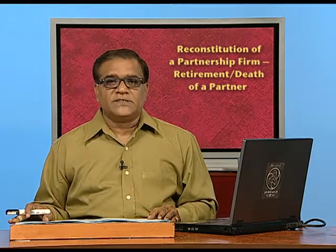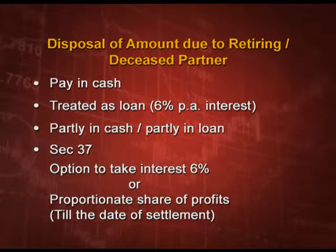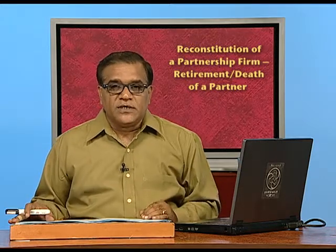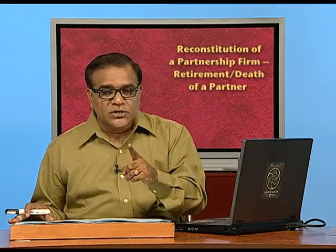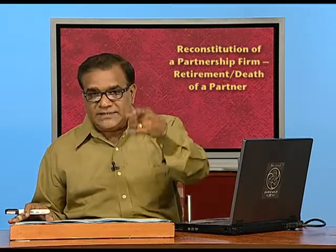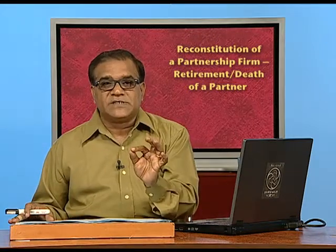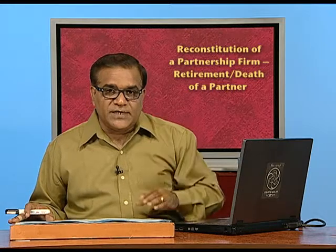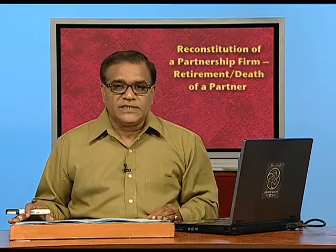We also have the option of section 37 of the Indian Partnership Act. Section 37 says that you may take interest at 6 percent, or you have an option to take the proportionate share of profit till the date of settlement. Suppose a partner dies on 1st January and you are settling his account on 30th June. For all these 6 months, whatever you have earned on his capital, a proportionate share will be calculated and given to that partner, or interest at 6 percent per annum. Both options must be offered, and naturally he will take whichever is greater.